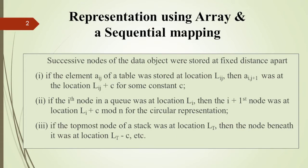For an integer, the fixed distance is 2 to 3 bytes. Successive nodes are stored at a fixed distance apart. For example, in a table, elements a[i][j] are stored such that the location of a[i][j] is L[i][j], and a[i][j+1] must be in L[i][j] plus some constant c. For the i-th node, the i+1 node is at location L[i] plus c mod n for circular representation. In the stack, the topmost element is at L[t] and the first data is at L[t] minus c.